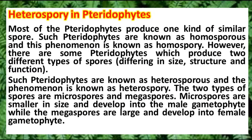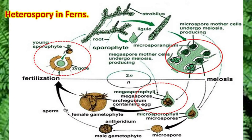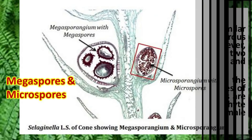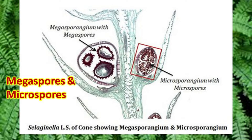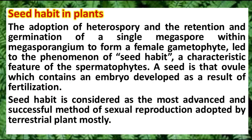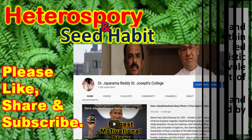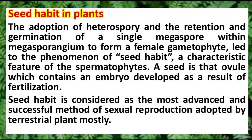Most pteridophytes produce one kind of spore and are called homosporous. But some pteridophytes produce two types of spores, called heterospory, specifically microspores and megaspores. Microspores produce the male gametophyte and megaspores produce the female gametophyte. The adoption of heterospory and the retention and germination of a single megaspore within the megasporangium to form a female gametophyte led to the phenomenon called seed habit.